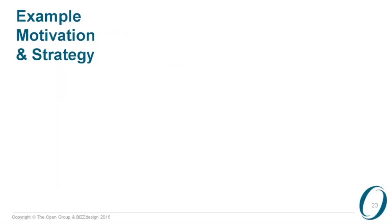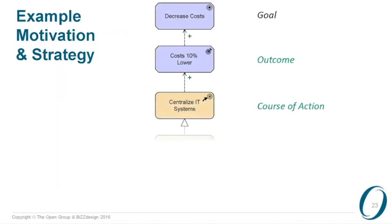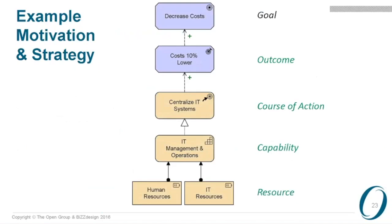To put this in a simple picture: on top we see a goal, which was already a concept in ArchiMate version two. We see that there's an outcome defined — costs 10% lower — which influences this goal in a positive way. And we have a course of action, centralizing the IT systems, which is realized by just one capability — being good at managing and operating your IT. And that is then supported by human resources, IT resources, et cetera.